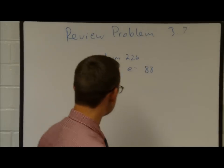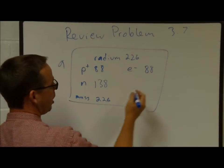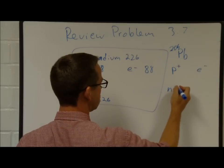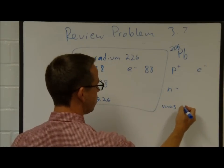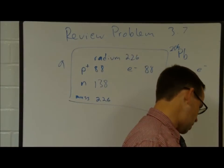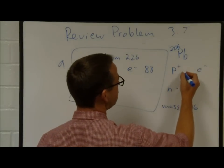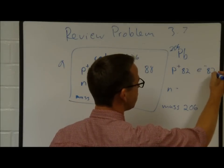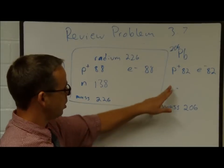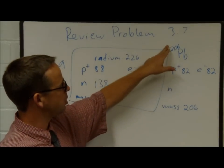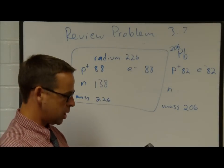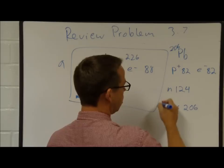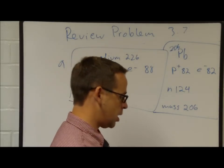Part B is lead-206. We look for lead (Pb) on the periodic table and see it is element number 82. Therefore there are 82 protons. No charge is indicated, so there are also 82 electrons. Number of neutrons: 206 minus 82 equals 124. So lead-206 has 82 protons, 82 electrons, and 124 neutrons.